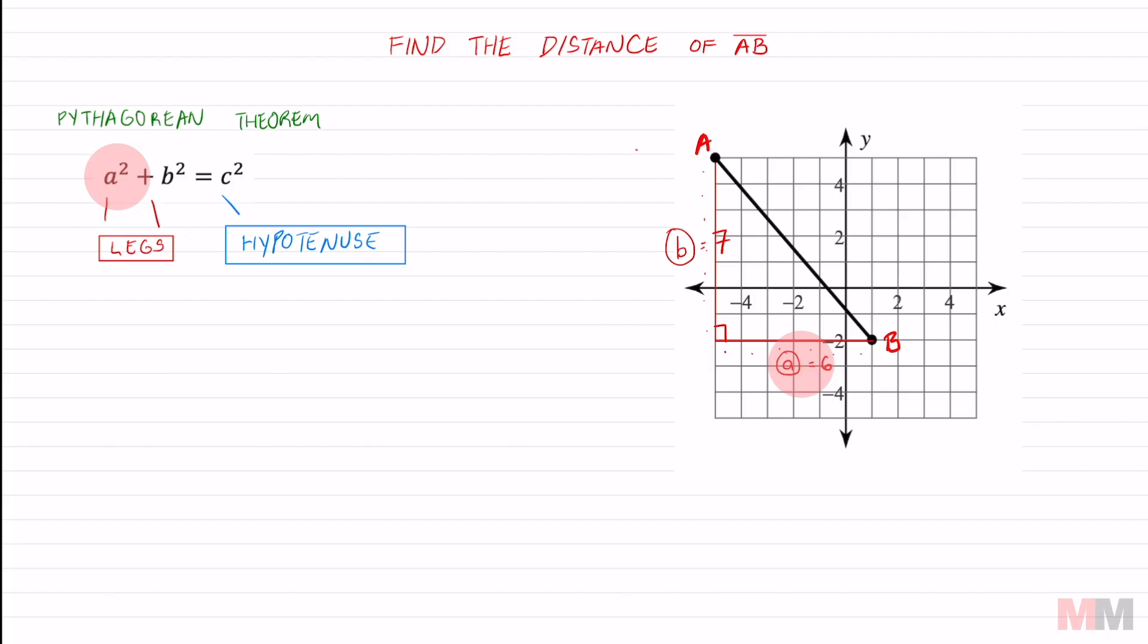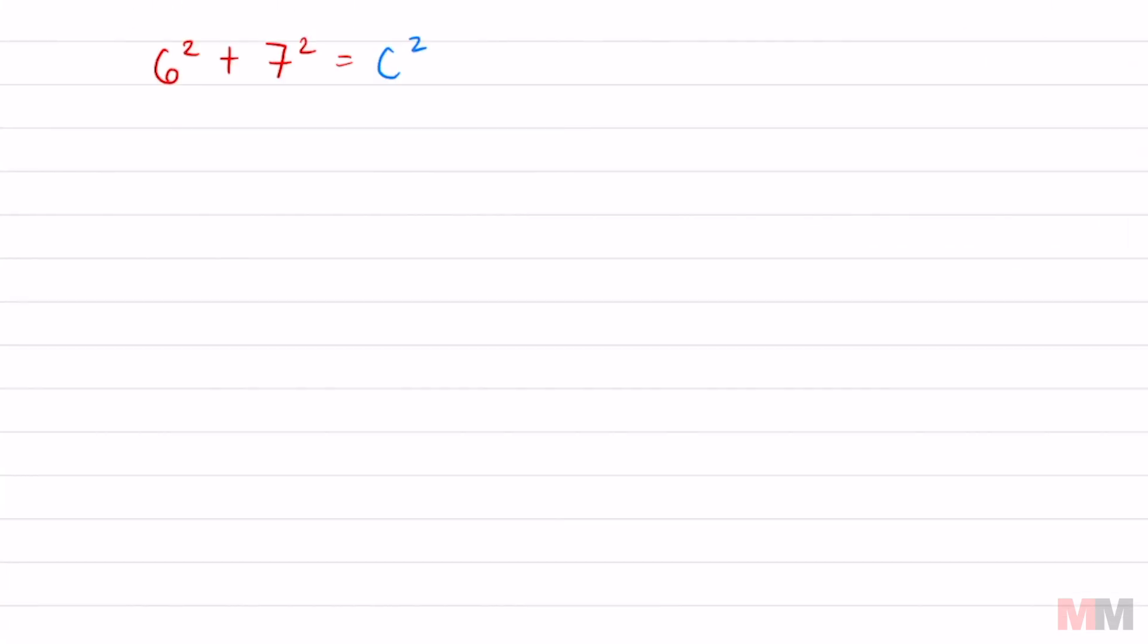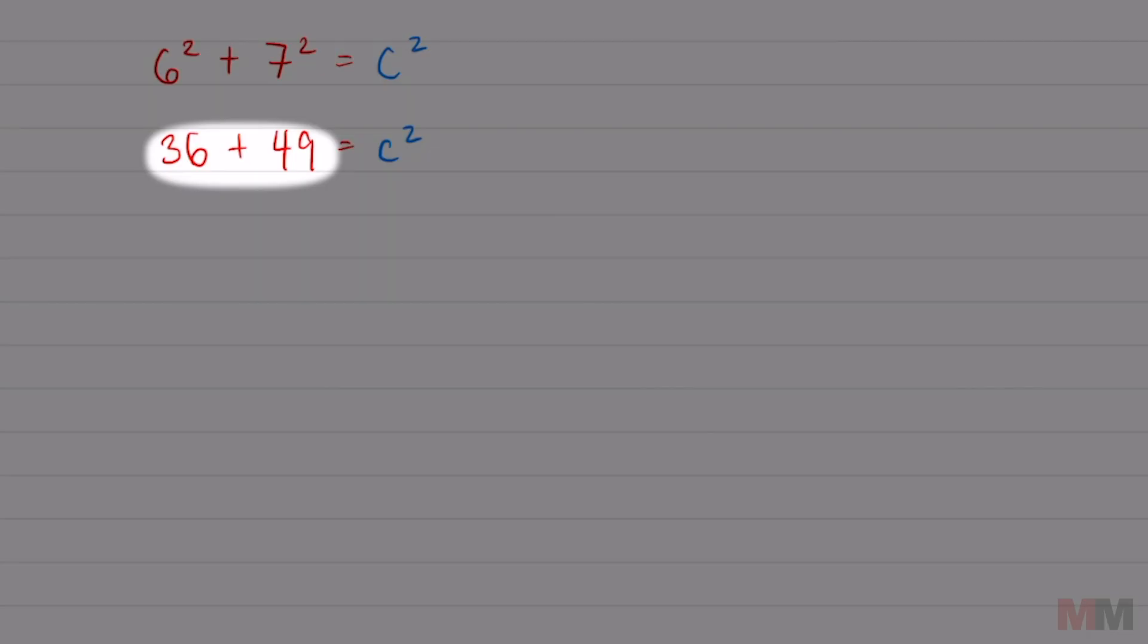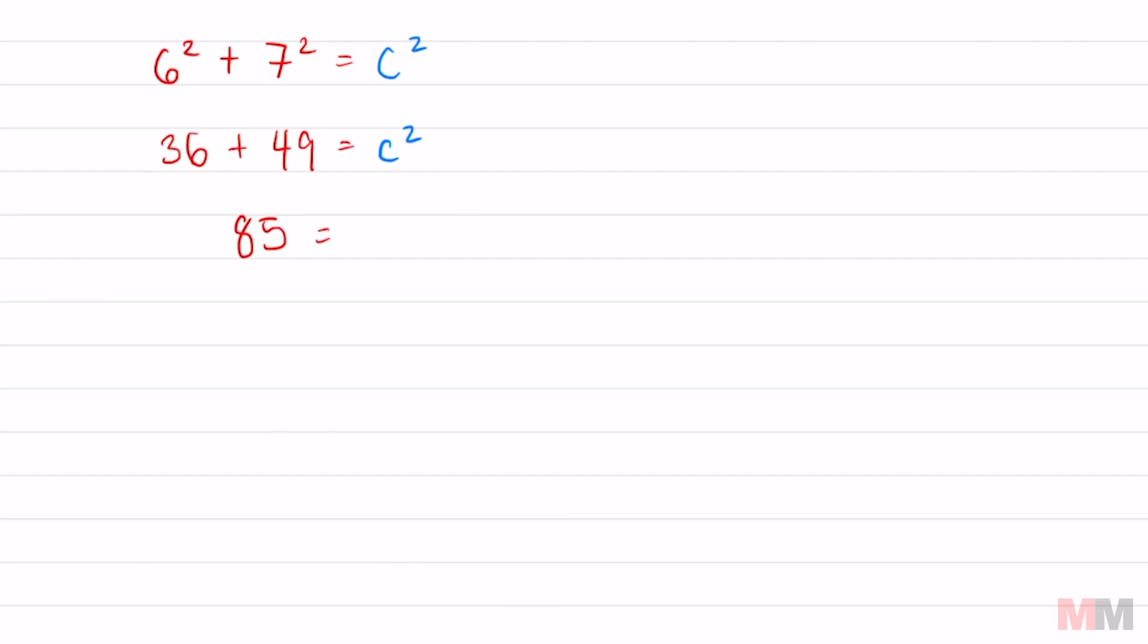And we're gonna take six squared plus b squared, seven squared to get c squared. From here, let's square these numbers. Six squared is just 36 plus seven squared is 49 equals c squared. And keep simplifying further. 36 and 49, those are like terms so we can add them to get 85 equals c squared.